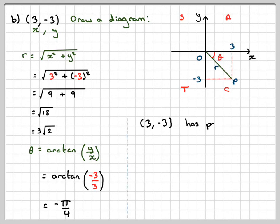Therefore, (3, -3) has polar coordinates (3√2, -π/4). The expectation would be to give this as an exact answer if possible. This has been a video to show you how to change Cartesian coordinates into polar coordinates. I hope you've understood, and I thank you very much for watching.